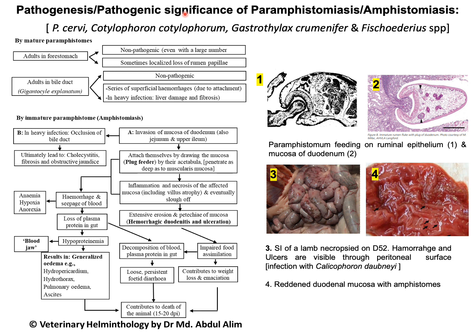In summary, adults are usually non-pathogenic, while immature paramphystomes are highly pathogenic. They may cause hemorrhagic duodenitis and ulceration of the duodenum, and due to the mucosal damage, the pathogenesis also includes generalized hyperproteinemia, accumulation of fluid in different organs, and altogether the animal may die within 15 to 20 days post infection.